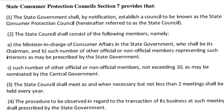There shall be such number of other official or non-official members not exceeding 10, as may be nominated by the central government. The state council shall meet as and when necessary, but not less than two meetings shall be held every year. The procedure regarding the transaction of business at such meetings shall be prescribed by the state government.